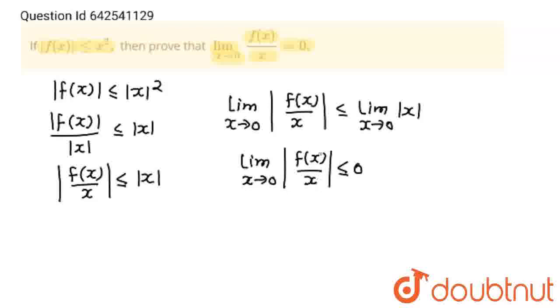Less than or equal to 0 means either this value is less than 0 or this value is equal to 0. Either lim x→0 |f(x)/x| < 0 or lim x→0 |f(x)/x| = 0.